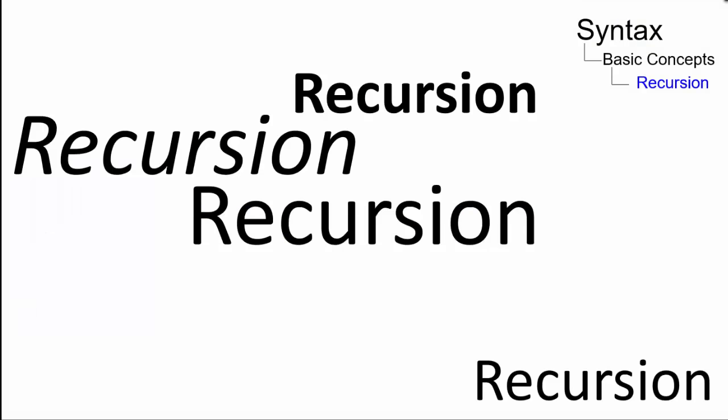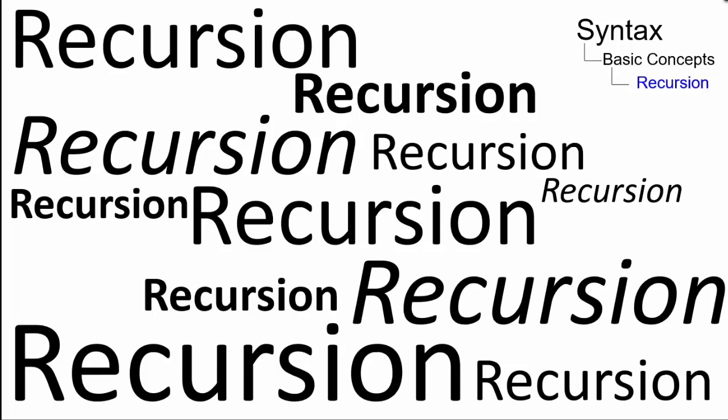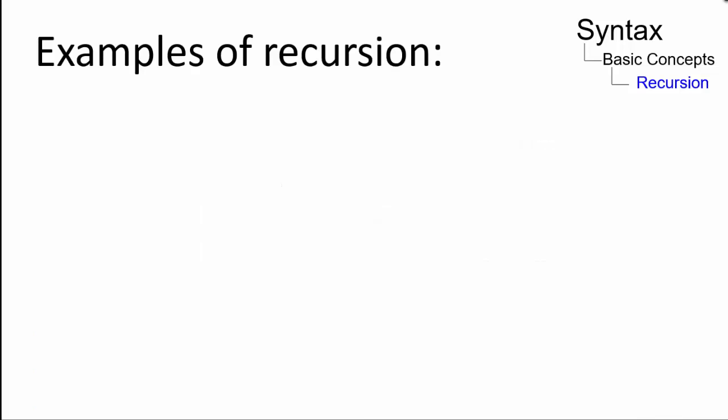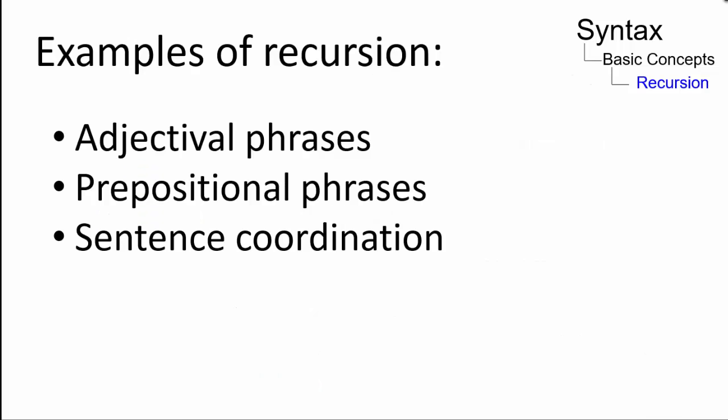Recursion describes a repetition of a linguistic element or grammatical structure in sequence. The recursive property of language enables its grammar to produce an infinite number of sentences. In other words, there is no upper limit to the possible sentences that a speaker of a language can create. Recursion can occur in adjectival phrases, prepositional phrases, or sentence coordination.